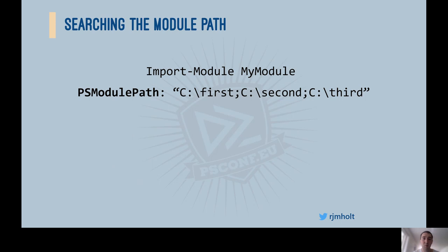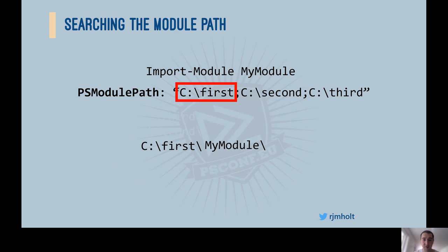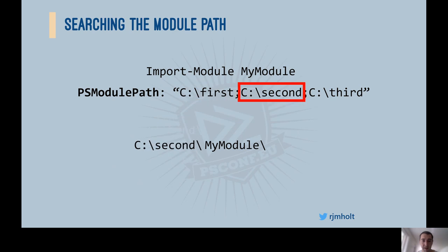Let's look at an example of how we search the module path for a given module. Imagine we want to import MyModule, and we have three directories on the module path: first, second, and third. The first thing that happens is PowerShell looks for a MyModule directory under the first directory. When it doesn't find that, it immediately moves on. The key takeaway is that putting a PSM1 or DLL on the module path by itself without a directory means PowerShell won't find it for import — it must be in a directory of the module name.